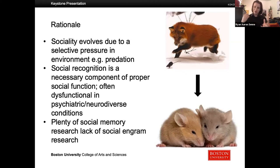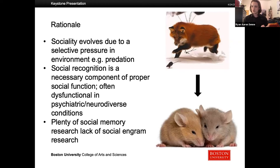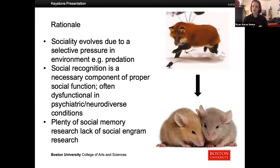The even worse thing is that there are also things like mental illness and neurodiverse conditions. One of the most prominent pathologies in those conditions is that there's some dysfunction of social memory or social behavior. In schizophrenia, for example, the thing that actually causes the biggest reduction in quality of life is the destruction of your relationships.